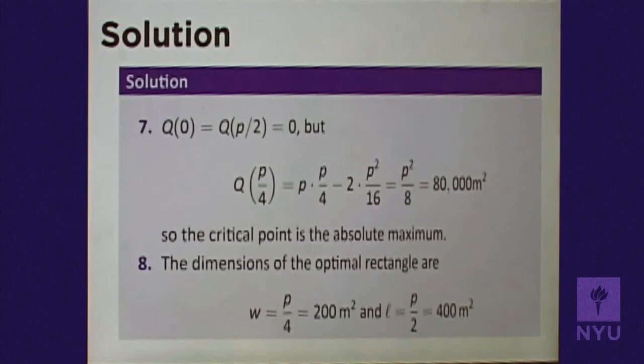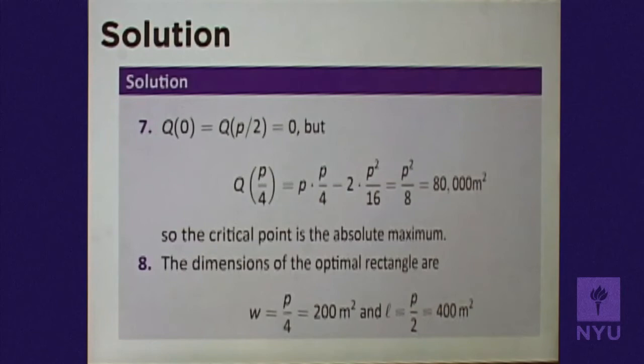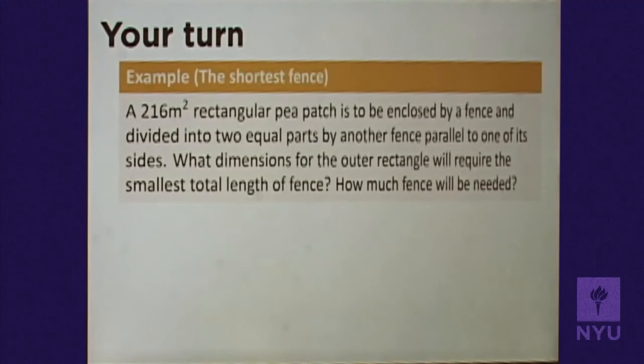Once you've found the maximum value, go back to the problem and make sure you've answered all the questions. The problem asked for the dimensions: if P = 800, the width is P/4 = 200 meters and the length is P/2 = 400 meters.